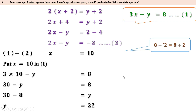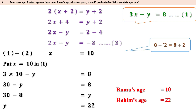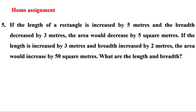So Ramu's age is 10 and Rahim's age is 22. Today we have learned how to solve two equations with two letters by adding or subtracting the equations to get an equation with only one letter. Now there is homework: if the length of a rectangle is increased by 5 meters and the breadth decreased by 3 meters, the area decreases by 5 square meters. If the length is increased by 3 meters and breadth increased by 2 meters, the area increases by 50 square meters. Find the length and breadth. We shall discuss the remaining part in the next video. Bye.